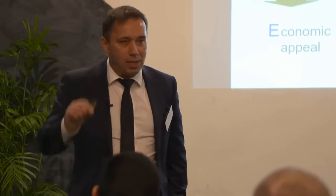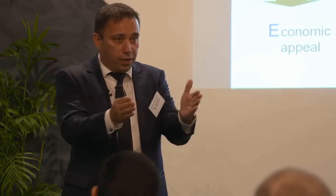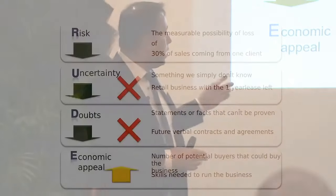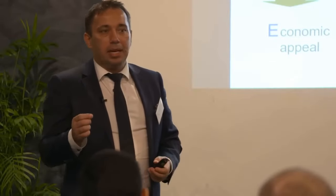Economic appeal asks: how many people can actually buy your business? If you need to be a plumber with access to a million dollars, your market becomes a very niche, small number of people. But if that same plumbing business has a manager and project manager — some management levels — and you offer 100% vendor finance, suddenly everybody is your market. I'm not saying give 100% vendor finance to everyone, but it illustrates how you can increase economic appeal.